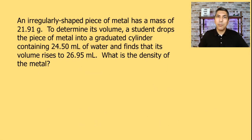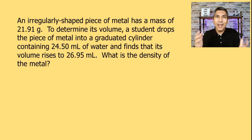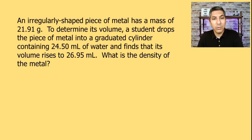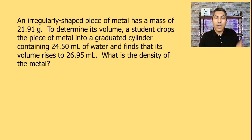Now let's look at another object. It worked out nicely that the last problem had a regularly shaped block — rectangularly shaped — so finding the volume was just length times width times height. But most of the time objects are not that regularly shaped. Here's the next question: an irregularly shaped piece of metal has a mass of 21.91 grams. To determine its volume, a student drops the piece of metal into a graduated cylinder containing 24.50 milliliters of water and finds that the water level rises to 26.95 milliliters.